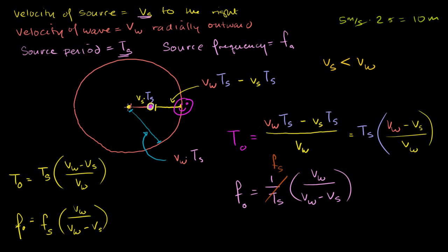After one period, where is that first wave front, or that first pulse, or that first crest, and where is the source? Because exactly one period has passed, and the source will be ready to emit another crest or another cycle. The distance between where the source is and that first crest is going to be the wavelength, because the next emission is traveling at the exact same velocity, separated by that distance. How long will it take to travel that distance? It's traveling at a speed of v sub w. That tells you the observed period, and the observed frequency is just the inverse of that.